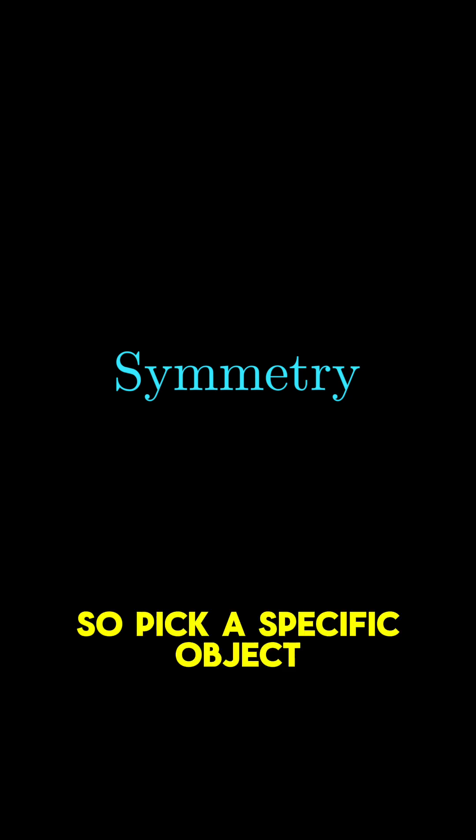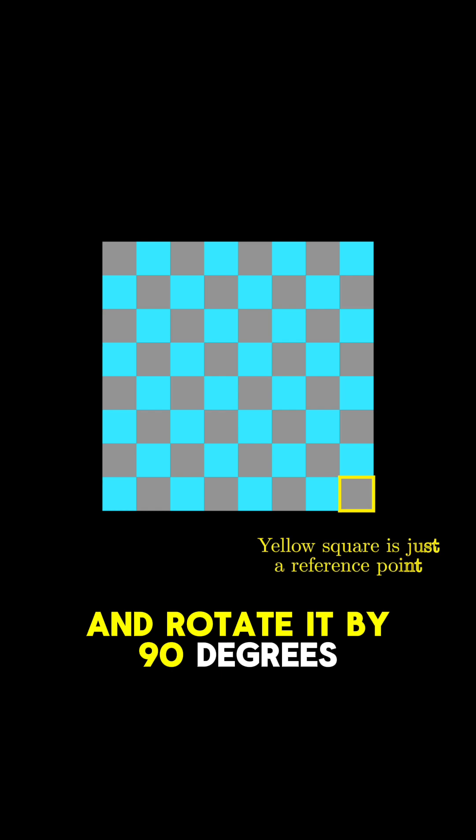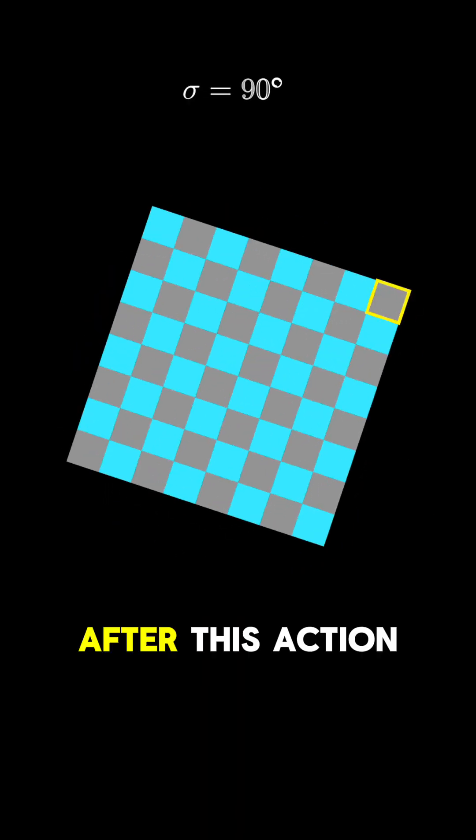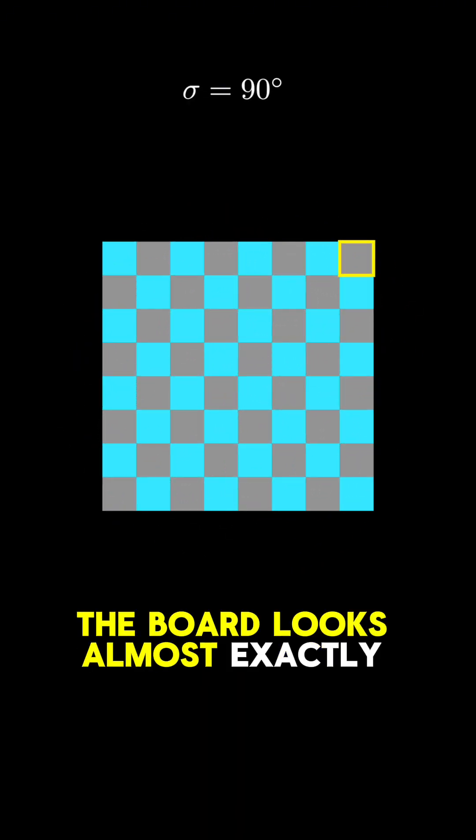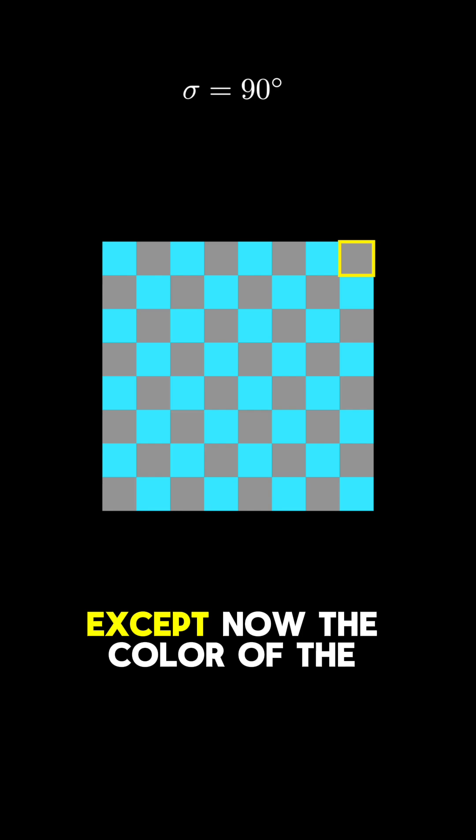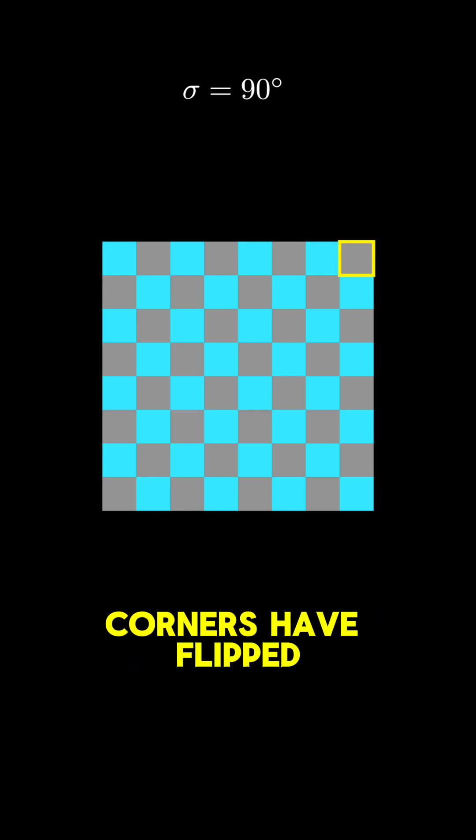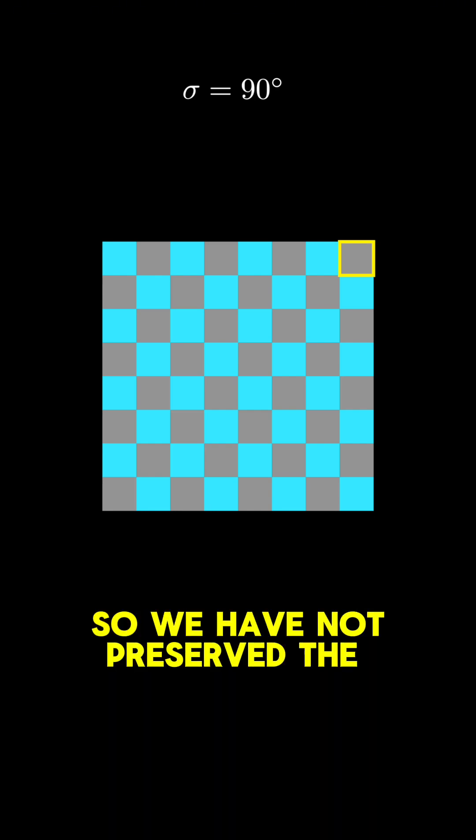So pick a specific object, say a checkerboard, and rotate it by 90 degrees. After this action, the board looks almost exactly the same, except now the color of the corners have flipped. So we have not preserved the original structure.